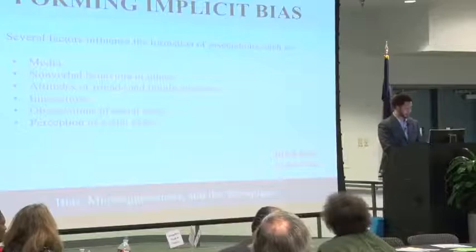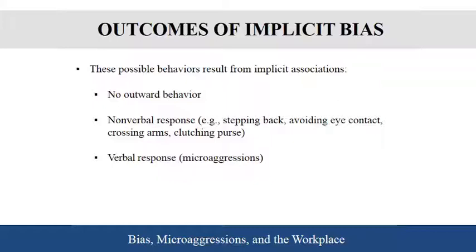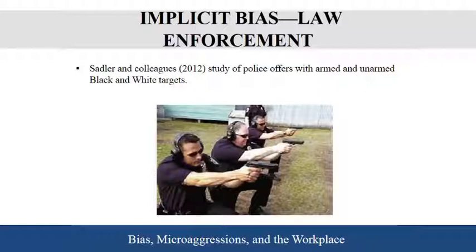When we have these biases, there are three different ways they can manifest. One, we can have no outward behavior — which is extremely rare. Two, we can have nonverbal behavior, such as stepping back, avoiding eye contact, crossing our arms, clutching purses or wallets. Three, we can have verbal responses, such as microaggressions. We see this play out in all kinds of different areas of our lives.